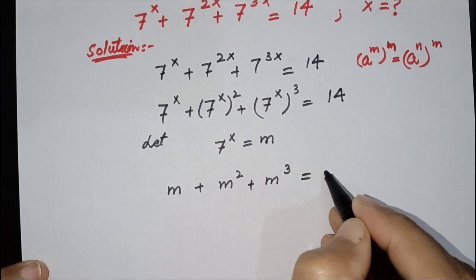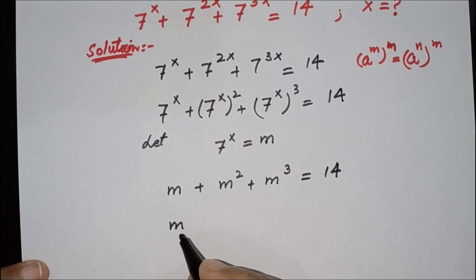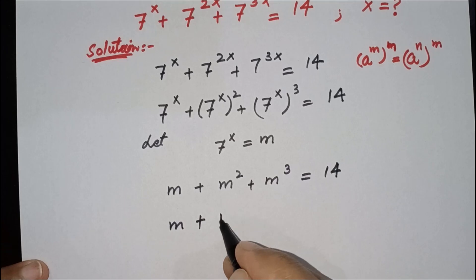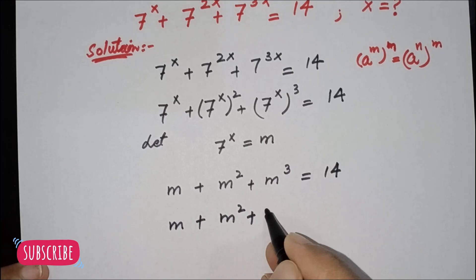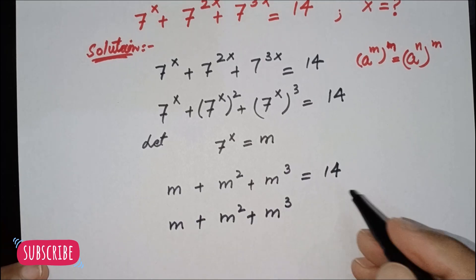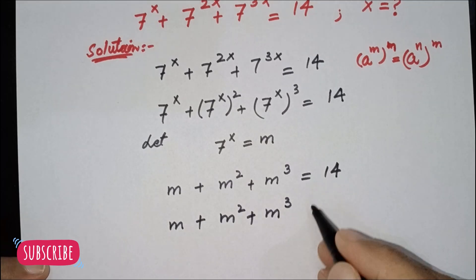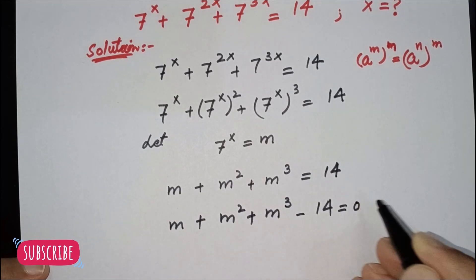We plug in the value of 7^x and we get m plus m squared plus m cubed equal to 14. In the next step, we bring 14 to the other side: m plus m squared plus m cubed minus 14 is equal to 0.